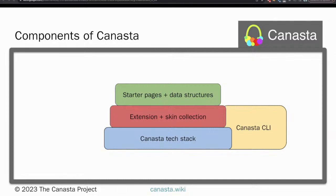The base of Canasta is Docker, but Canasta is not just a Docker image — it's actually comprised of three components that are closely intertwined. The foundation is the tech stack, which makes MediaWiki easier to manage. On top of that is Canasta's very large extension and skin collection, currently over 150 extensions and 10 skins bundled with Canasta. At the top is the starter pages and data structures, which we call packages, aiming to solve the blank page problem by reducing contribution inertia and providing best practices for wiki editors.